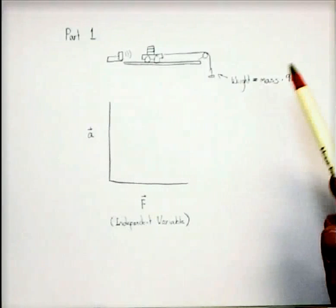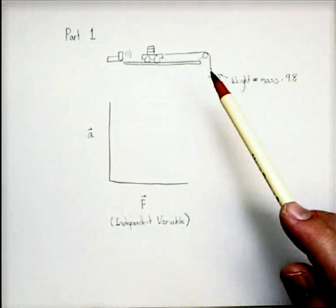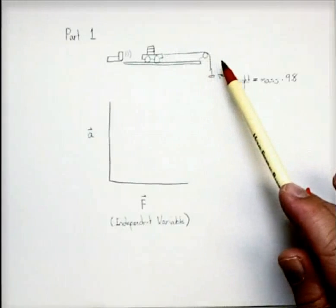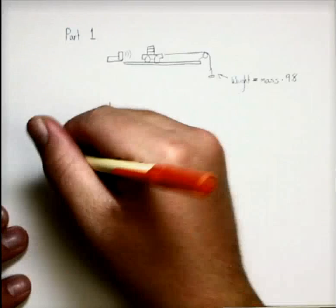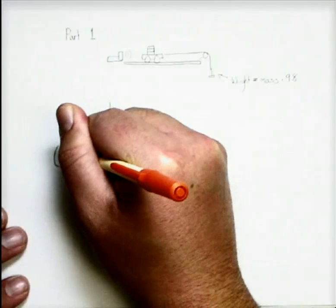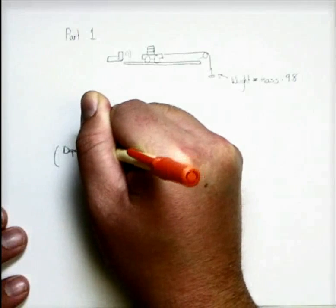We controlled the force. We had no control over the acceleration directly. We were just going to see what the acceleration was. We didn't know it could have been anything. For that reason, acceleration is called our dependent variable. It depends on what we do.